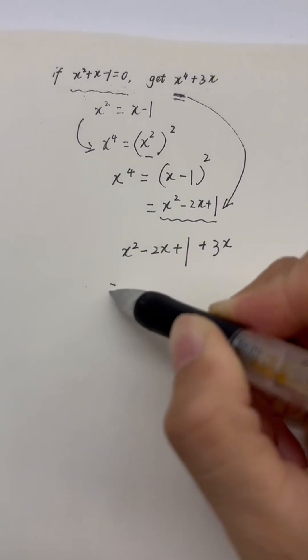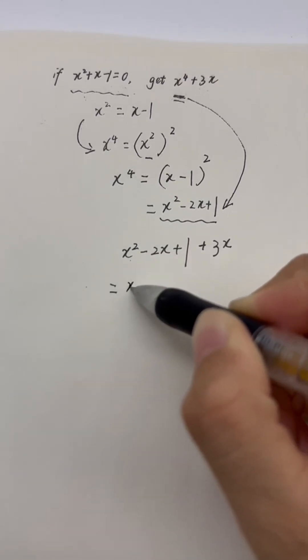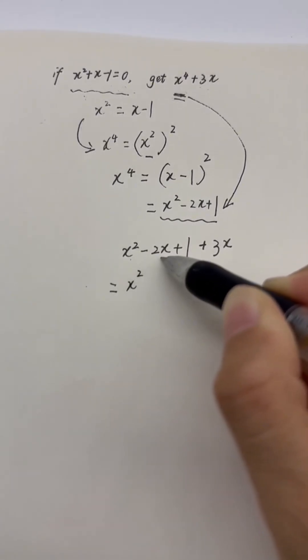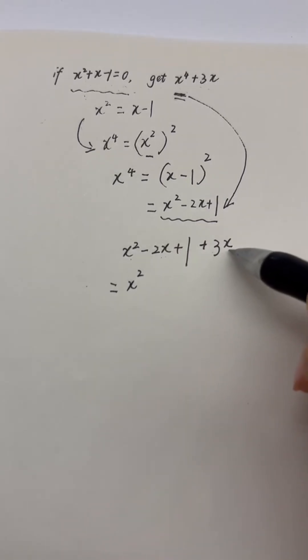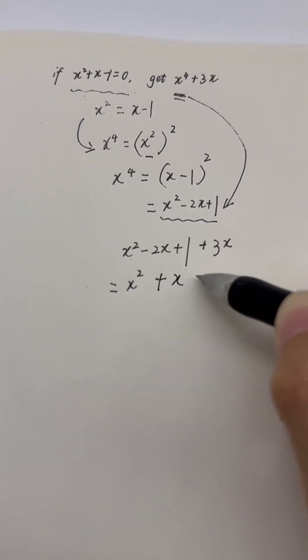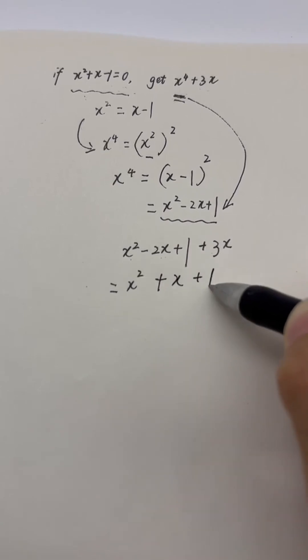And here x squared subtract 2 times x add 3x equals x squared add x add 1.